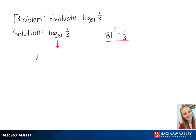We know that the fourth root of 81 equals 3. This means that 1 over the fourth root of 81 is equal to one-third. This is also equal to 1 over 81 to the one-fourth power. Using our exponent rules, we know that 1 over 81 to the one-fourth power is equal to 81 to the negative one-fourth power.